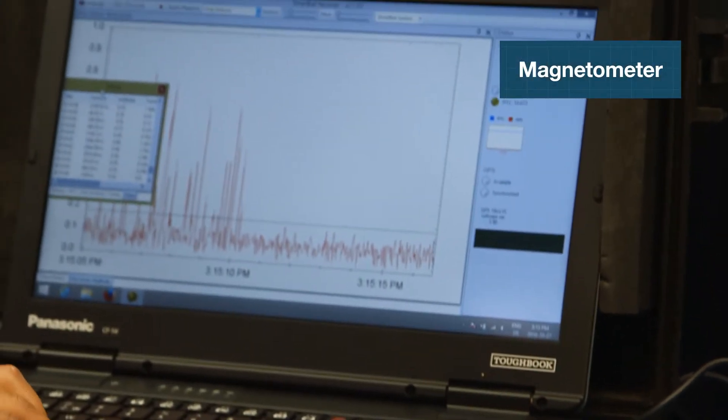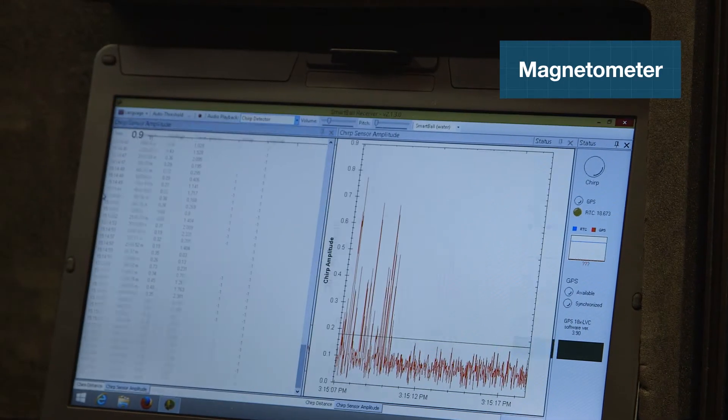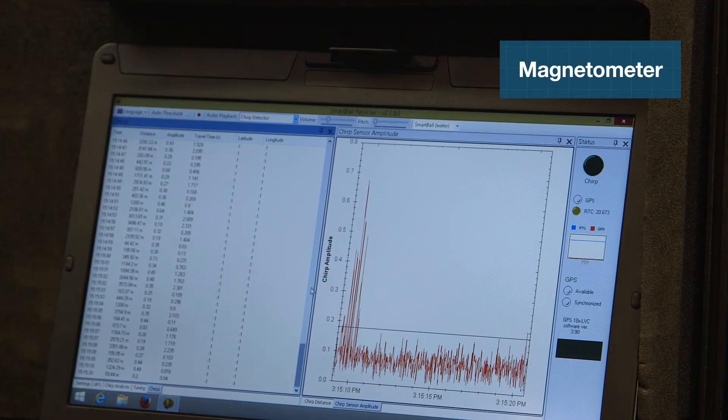We've got a magnetometer that's measuring the magnetic field coming off the pipe wall that can be used to find joints and other features in a pipeline.